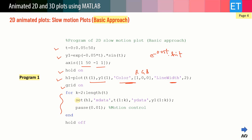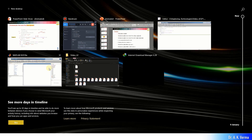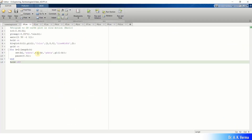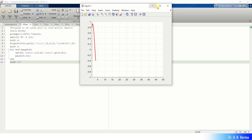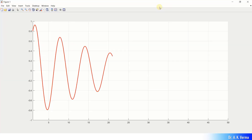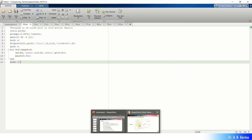Inside the for loop, I'm taking one set of x and y values and displaying them on the graph axes. The pause function controls the speed of plotting — you can change this value to make it faster or slower. Let me jump to MATLAB and run program one. This is the output: a slow moving exponentially decaying sine wave. You can plot any function like this.